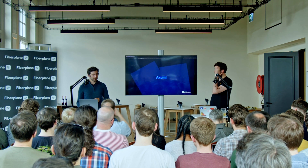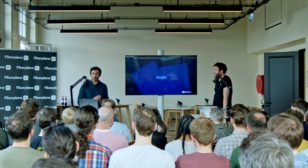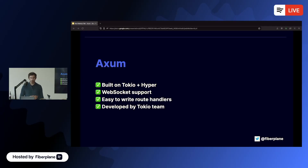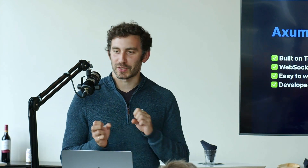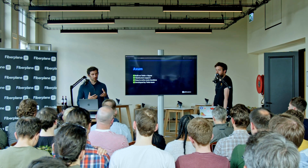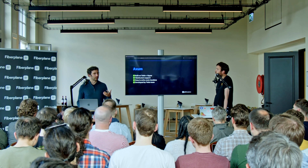At some point Axum was announced and we were excited. You always have to be wary of new frameworks, but it was worth looking into. It was released in July of last year and had some exciting things going for it. Similar to the others, it's built on Tokio and Hyper. It has web socket support, it's easy to write route handlers, and it's developed by the Tokio team. It feels like more of a part of the Tokio stack, which was exciting.